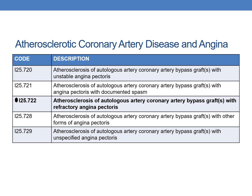Under I25.72 series (autologous artery bypass graft): I25.720 — with unstable angina pectoris; I25.721 — with angina pectoris with documented spasm; I25.722 — with refractory angina pectoris (new code); I25.728 — with other forms of angina pectoris; I25.729 — with unspecified angina pectoris.